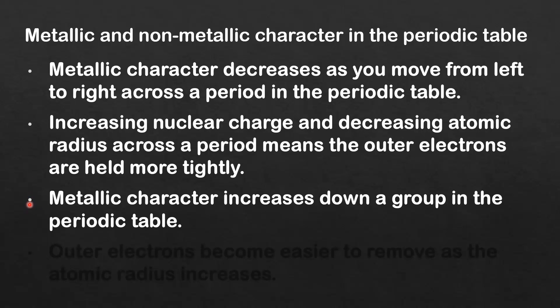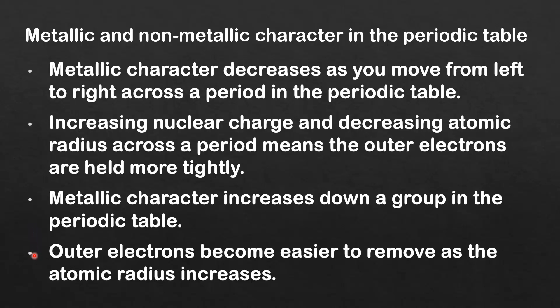Metallic character increases down a group in the periodic table, and the reason for this is outer electrons become easier to remove as the atomic radius increases down a group.